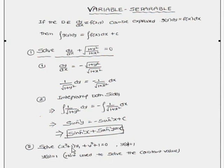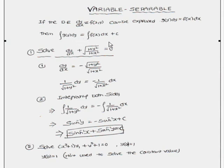Now, for one more example: (x² + 1) dy/dx + (y² + 1) = 0, with the initial condition y(0) = 1. You can solve this problem using the above method. The initial condition y(0) = 1 is given to obtain the constant value. Always remember: in the variable separable method, write the equation as f(y) dy = f(x) dx, and the solution is integral of g(y) dy = integral of f(x) dx plus c.